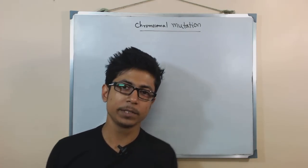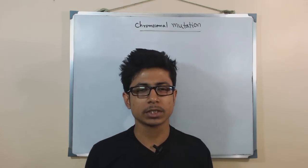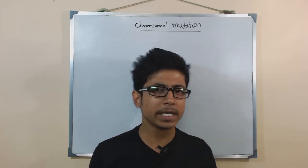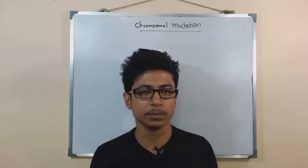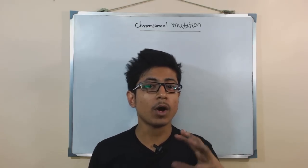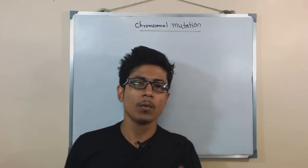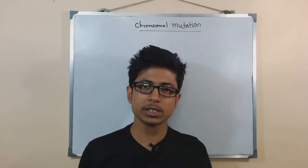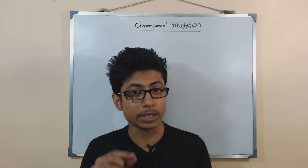Welcome back. In this video we'll be talking about chromosomal mutations. We have been talking about mutations for a long time and have seen many different varieties. Mutation can occur depending upon its organization in the cell and can be of two different types: chromosomal mutation and genetic or DNA mutation. DNA or gene mutation mostly occurs at the single base or single nucleotide level.